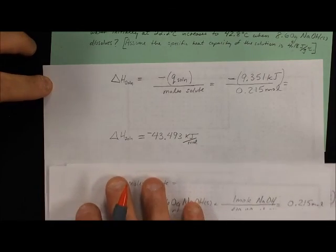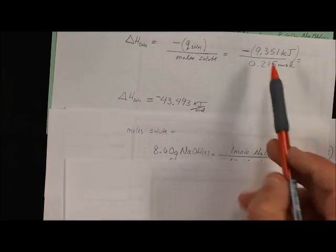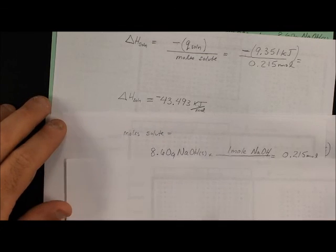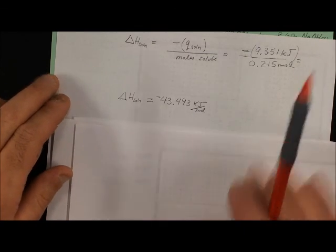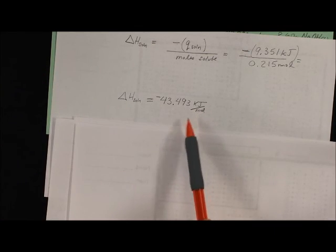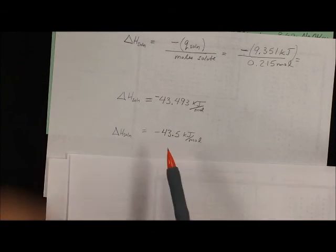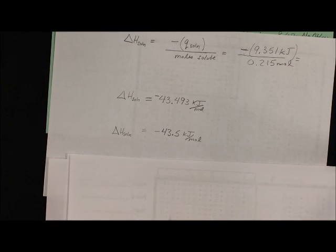And we get, and it is negative, 43.493 kilojoules per mole - that's a negative - or rounding to three significant figures, 43.5 kilojoules per mole. And it is negative. This should make sense.